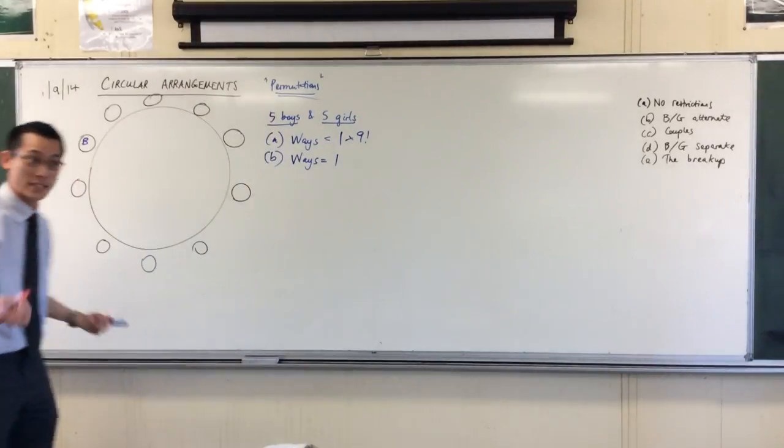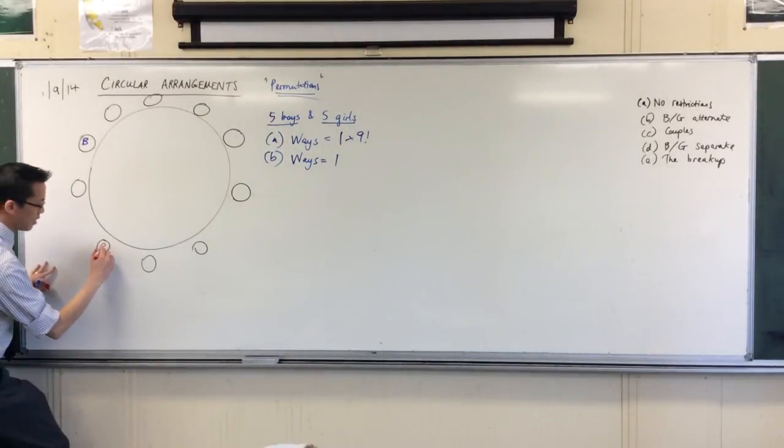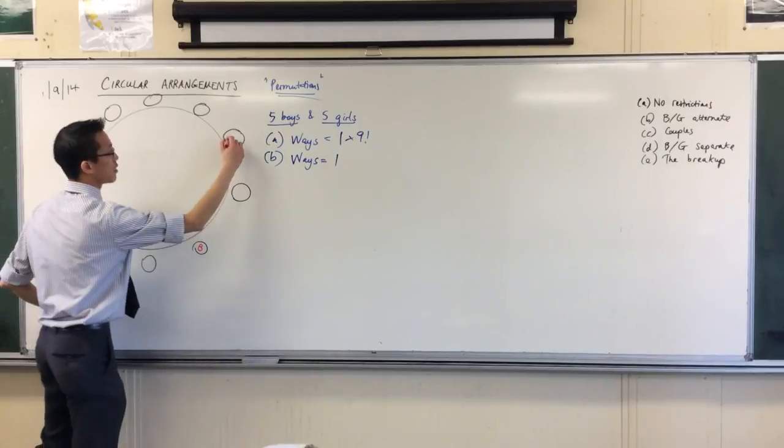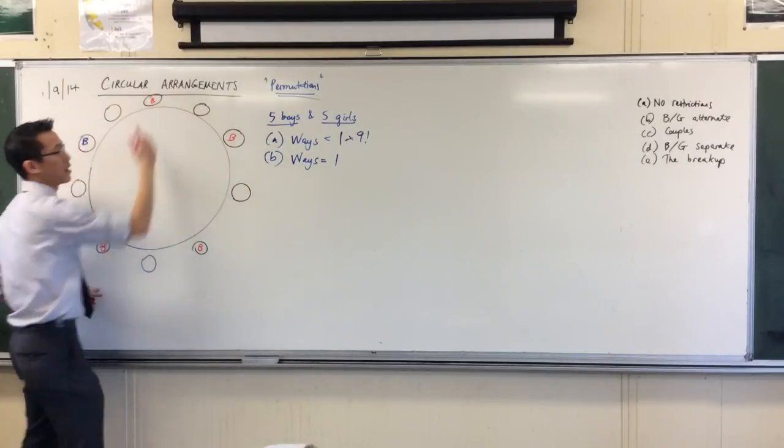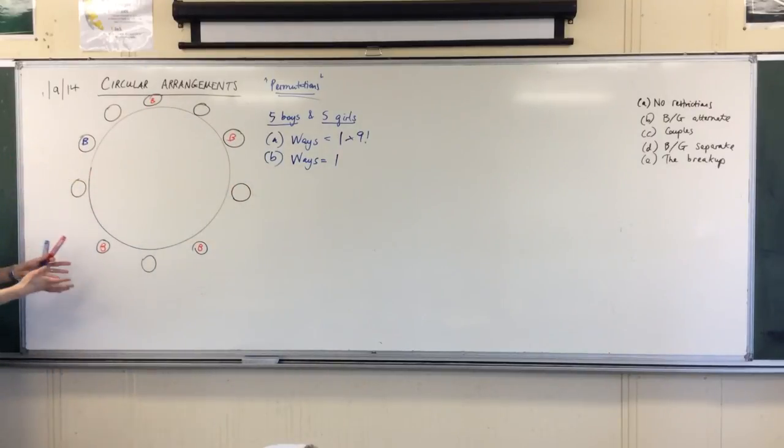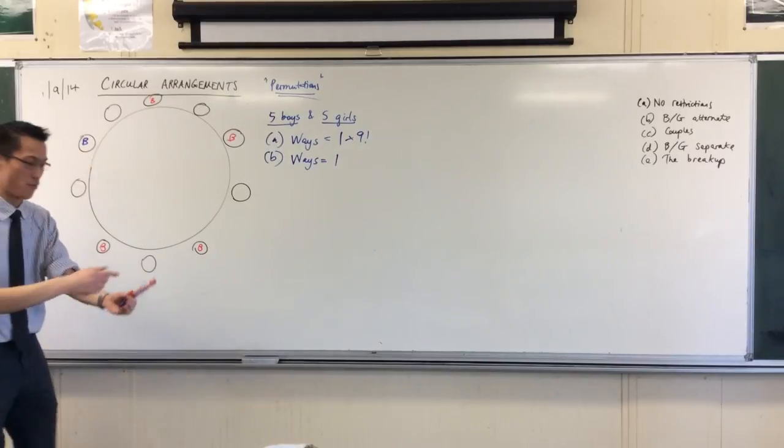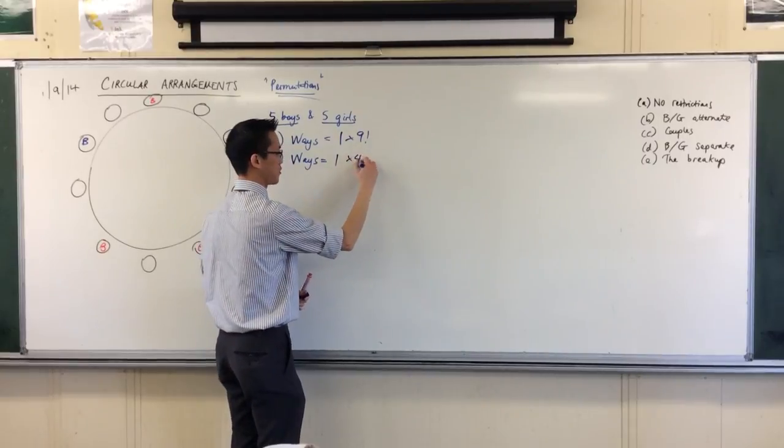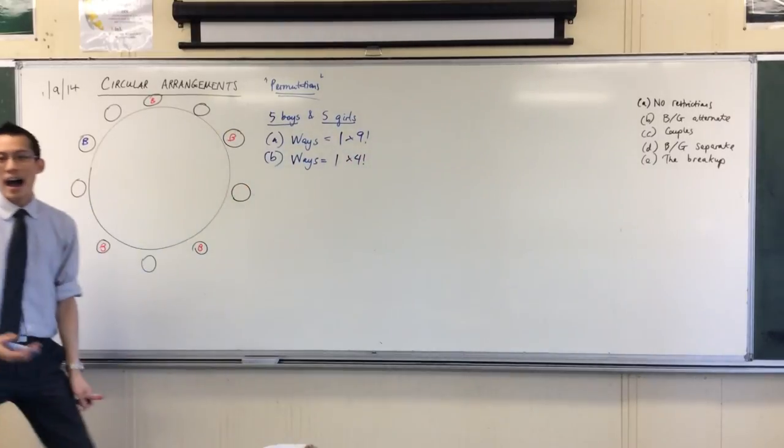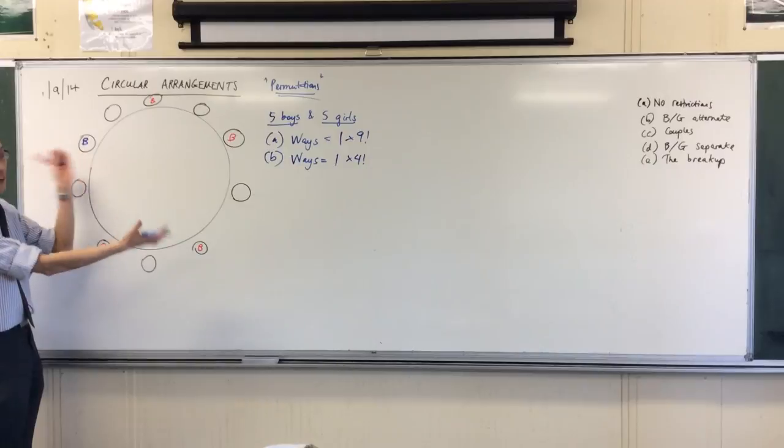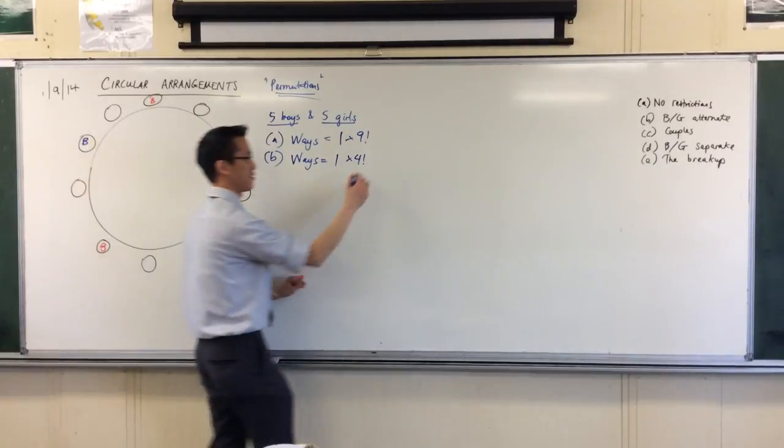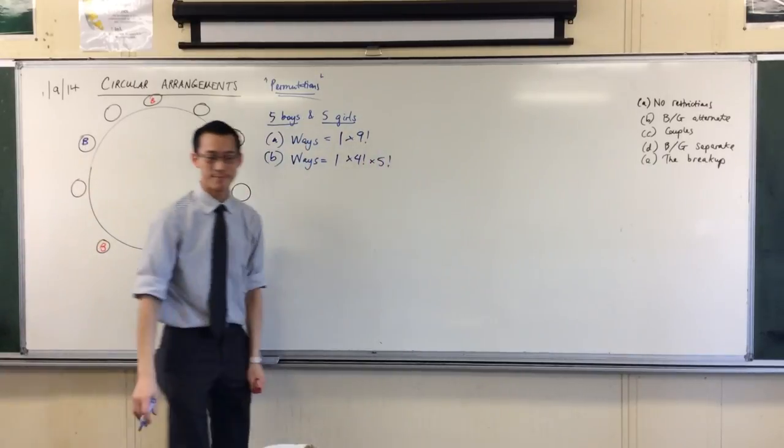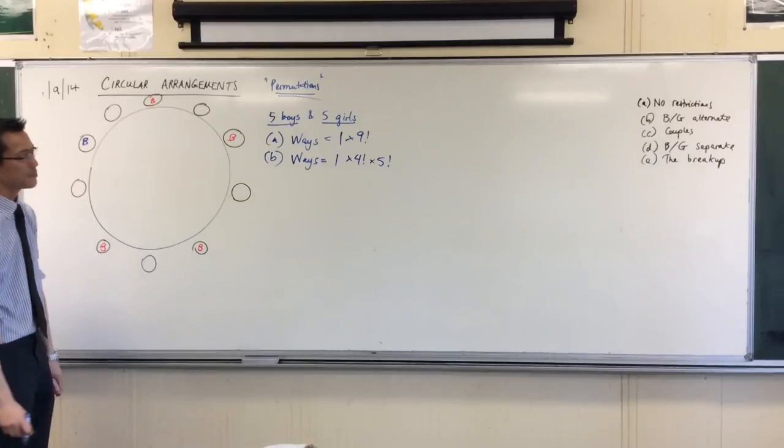And the answer is there are four potential spots left, namely here, here, here, and here. So now I have four spots and four boys to fill them with. So how many ways can I do that? Four factorial. And then the girls come along. Five spots, five girls to fill them with. Five factorial. Simple stuff.